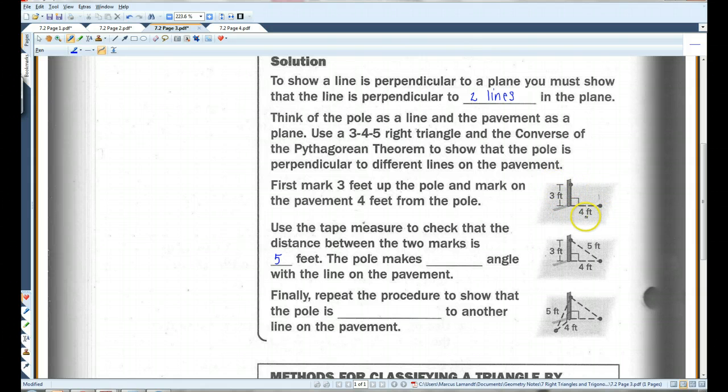So, this has to be, if this is three and this is four, the Pythagorean theorem states that this has to be five in order for it to be right triangle. So, all right, the pole makes a right angle with a line on the pavement. Finally, repeat the procedure to show that the pole is perpendicular to another line on the pavement.